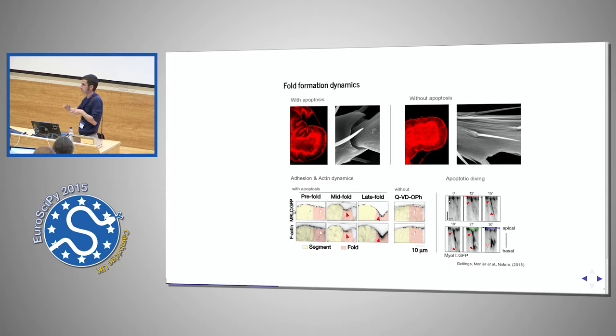Adhesion and actomyosin are implied. And you see that while the fold forms, you have an increase in adhesion proteins in actomyosin activity. And without apoptosis, you don't see those adhesions. So it seems that apoptosis is kind of upstream in the process and will command the whole series of events that will lead to the fold formation.